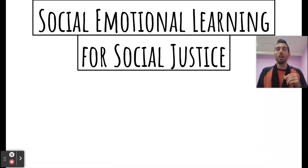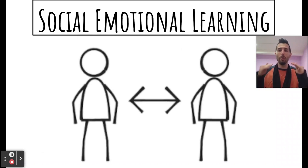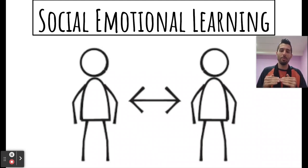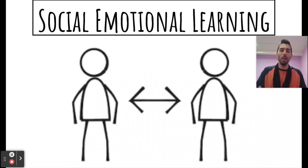We're going to take a look at how the mainstream individualist social-emotional learning principles lend themselves to social justice when we apply a group analysis. That's the key component — most often we're looking at an individualist model of social-emotional learning. How do we get from social-emotional learning to social justice? We're going to start with the more mainstream individualist take, where you have a one-on-one relationship, which is presumed to be on an equal power footing.